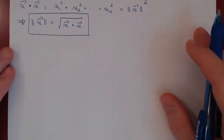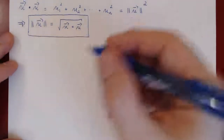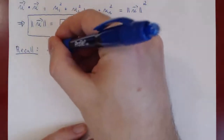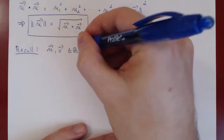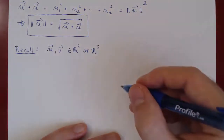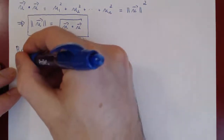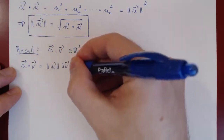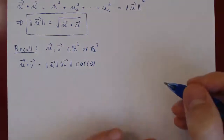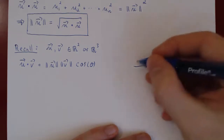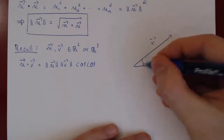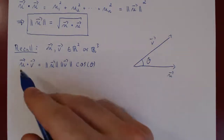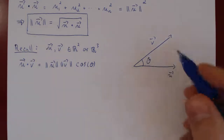Let's recall how we found the angle between two vectors in R² and R³. For vectors U and V in two- or three-dimensional space, we had the familiar equality: U · V = ‖U‖ · ‖V‖ · cos θ, where θ is the angle between U and V. This gives a very nice geometrical interpretation of the dot product — it equals the product of the two lengths times the cosine of the angle between them.